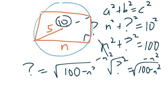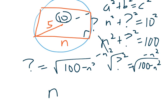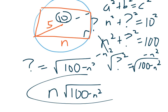And then since I multiply them together, it would be n times that. So it would be n times the square root of 100 minus n squared. And that's our answer.